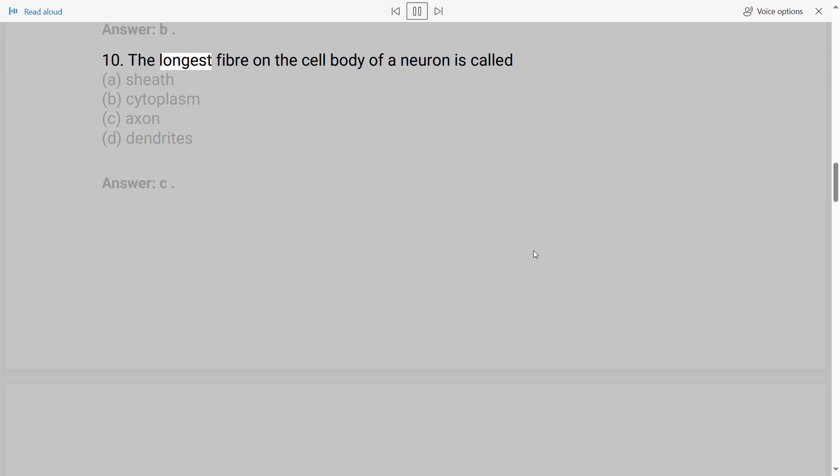10. The longest fiber on the cell body of a neuron is called A. Sheath B. Cytoplasm C. Axon D. Dendrites. Answer: C.